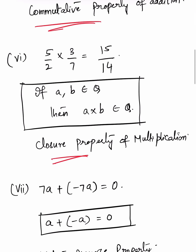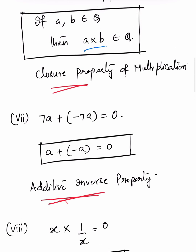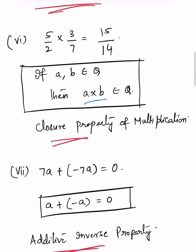5/2 × 3/7 = 15/14. Here, if a and b belong to Q, the product a × b also belongs to Q. This is the closure property of multiplication — if a and b belong to the set of rational numbers, then their product a × b also belongs to the rational number set.